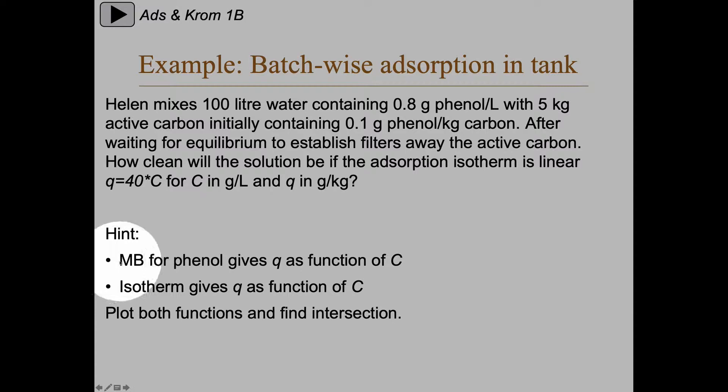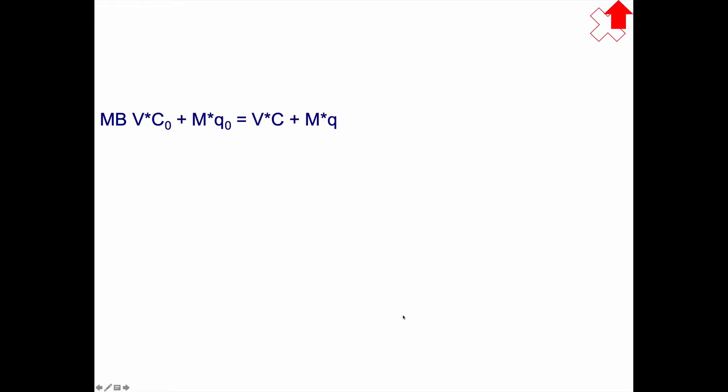Some hints here. Mass balance for phenol gives q as a function of C, isotherm gives q as a function of C, and you can plot both these functions and find the intersection. So let's start doing the mass balance.